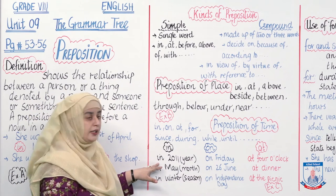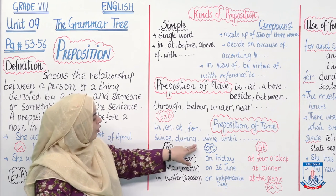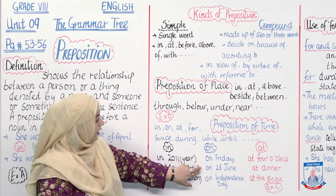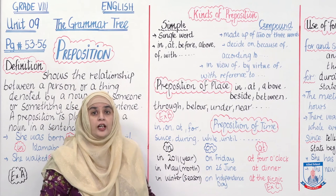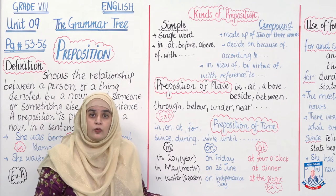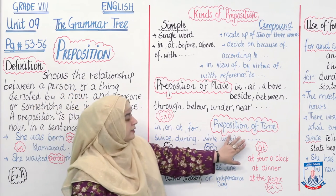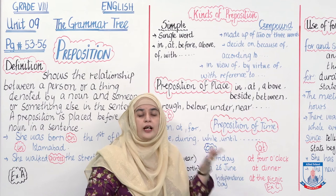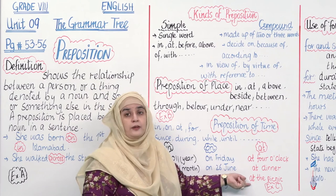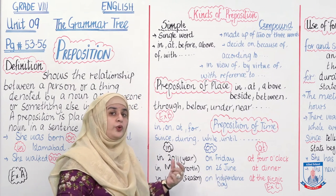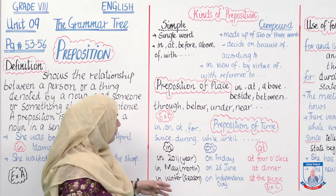'On' is used with the day, the date, or a specific day — for example, on Resolution Day, on Independence Day. 'At' is used at a specific time — at four o'clock, at six o'clock, at midnight, at dinner, at breakfast, at lunch, or at the picnic. These are the key usages of prepositions of time.